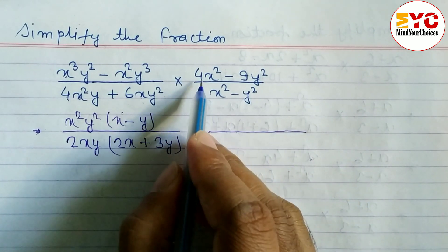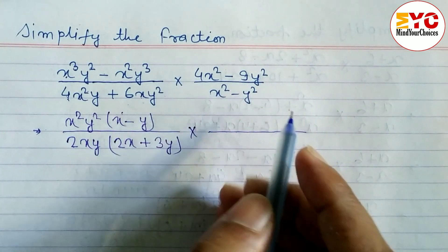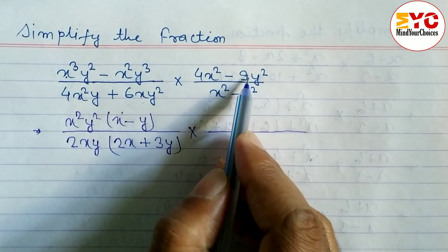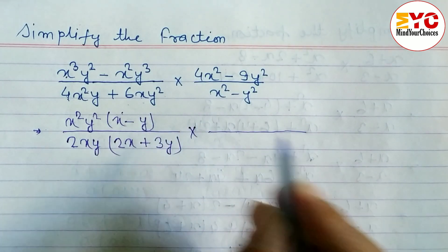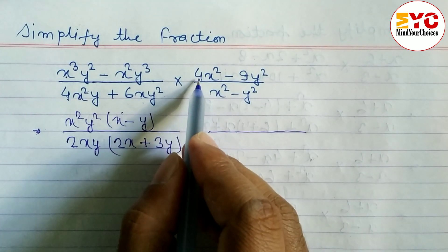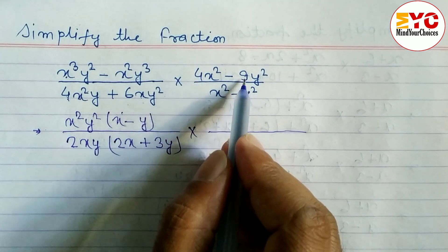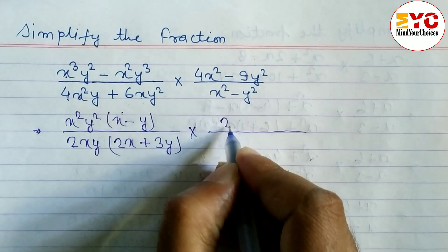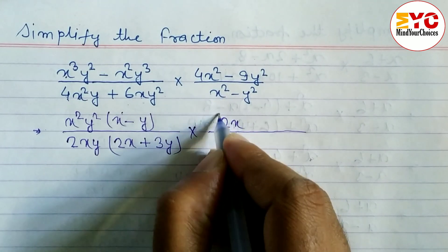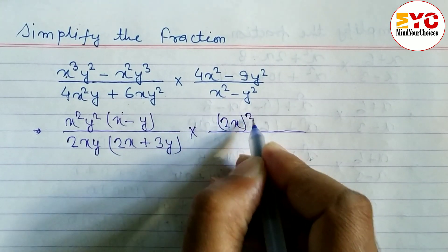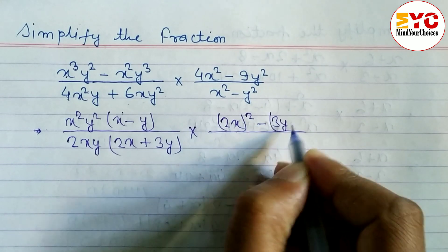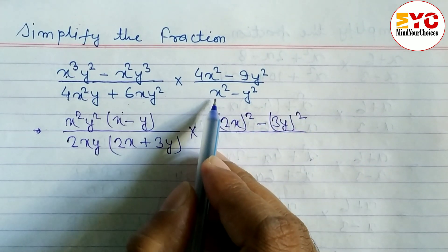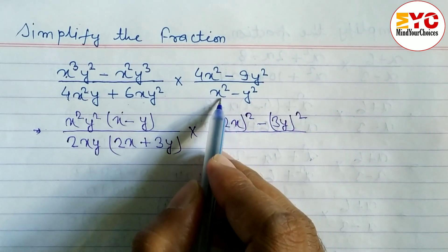We cannot take any more common factors, but we can convert to the form of a square minus b square. Square root of 4 is 2, and square root of 9 is 3, so we can write this as 2x whole square minus 3y whole square.